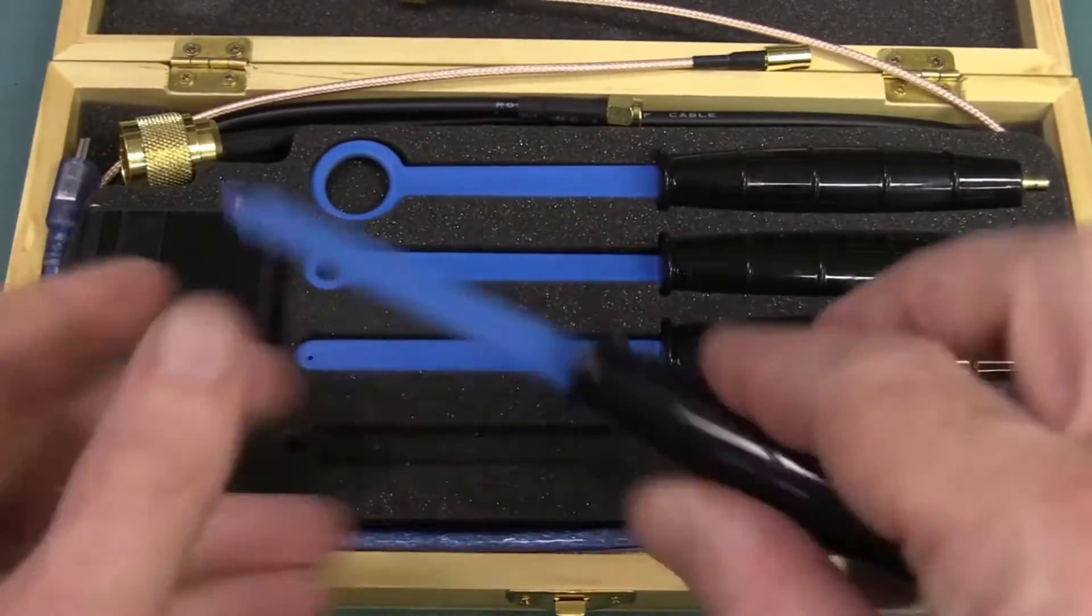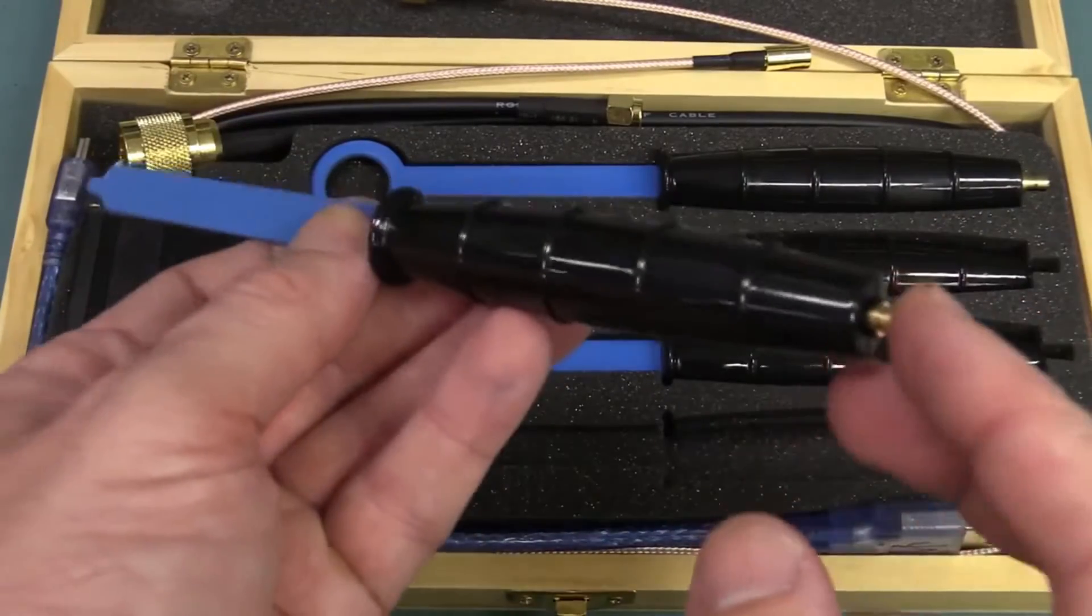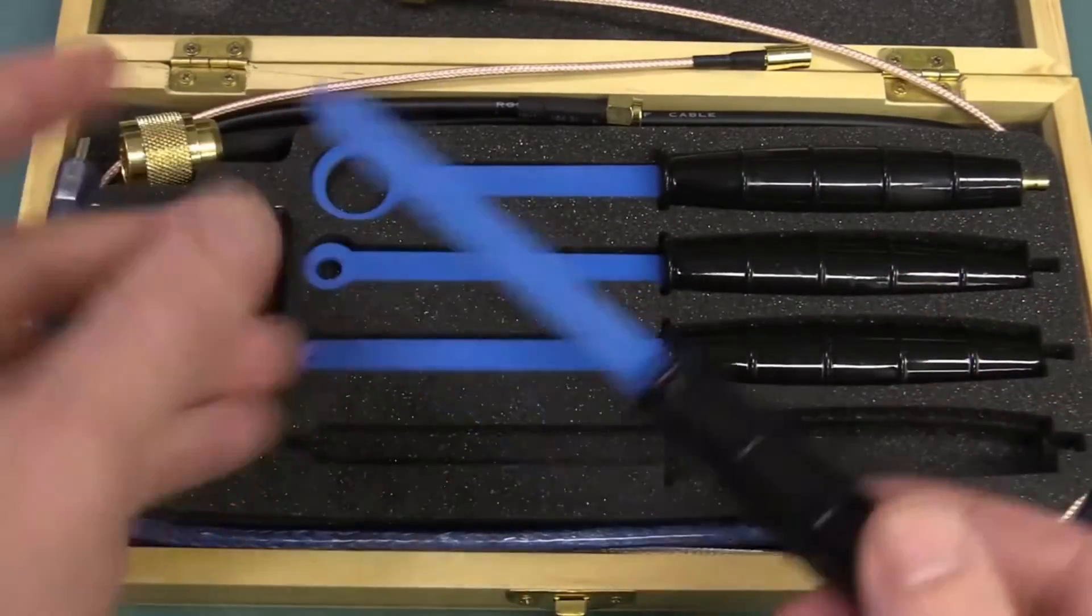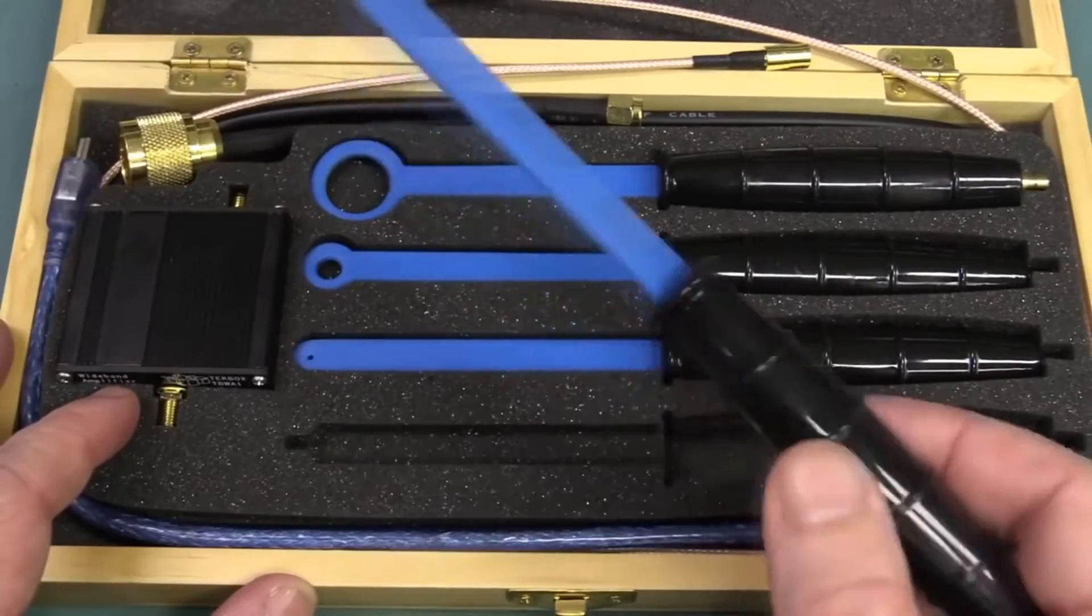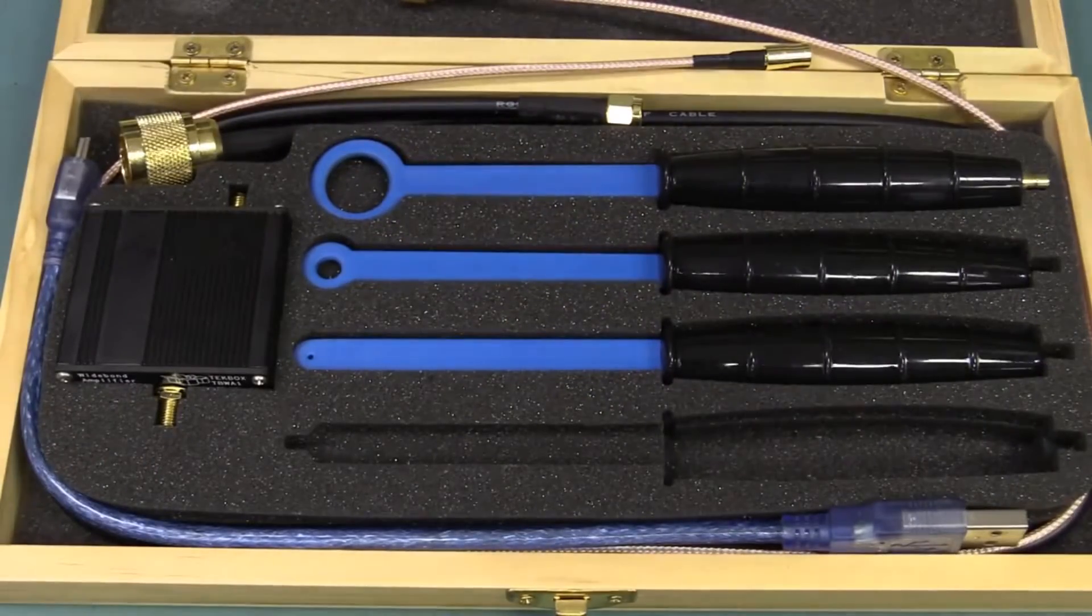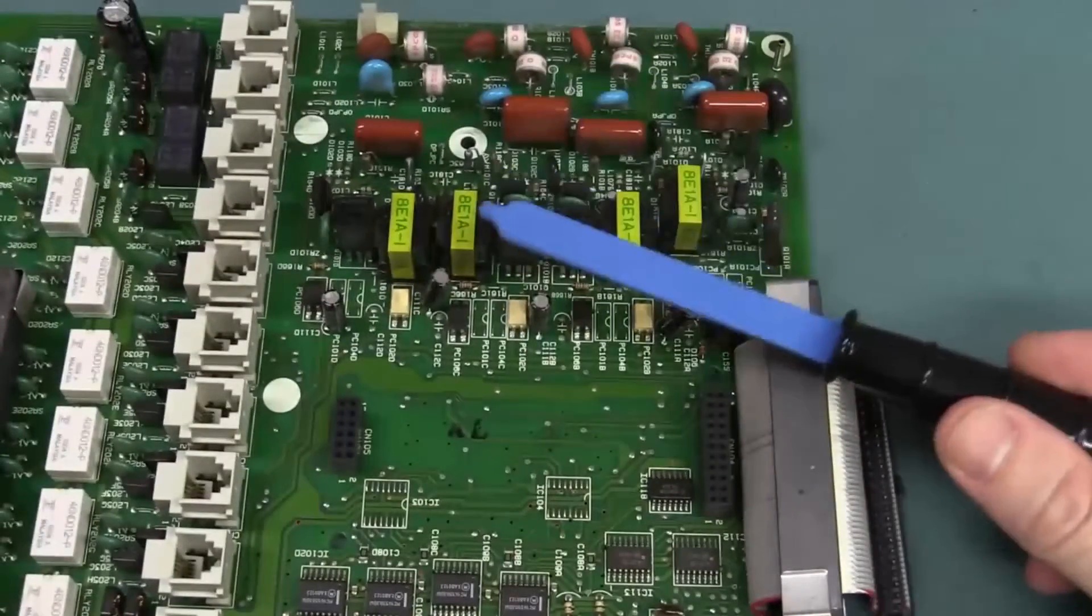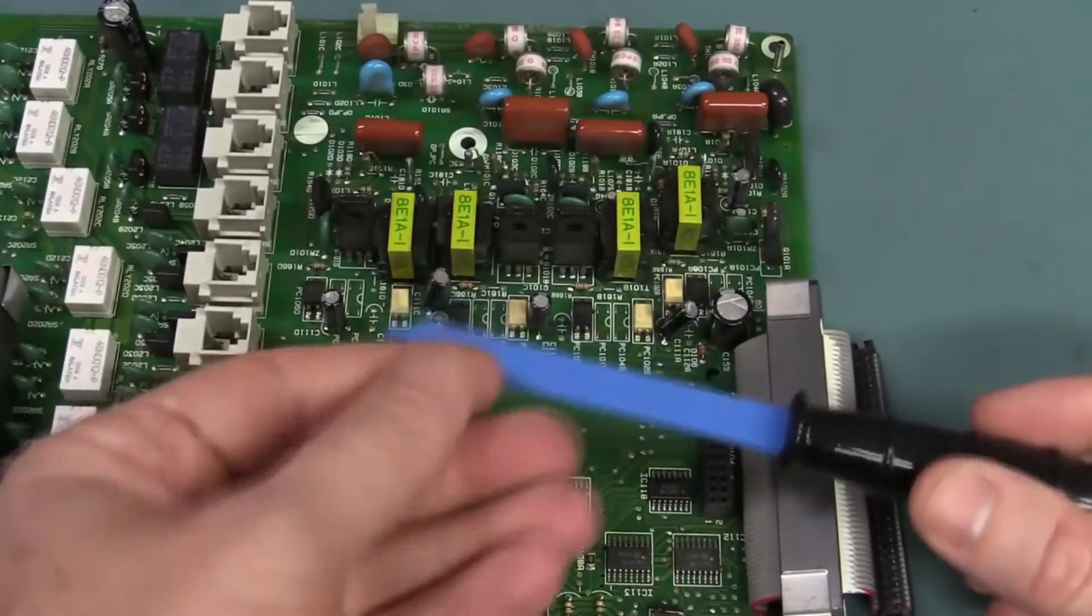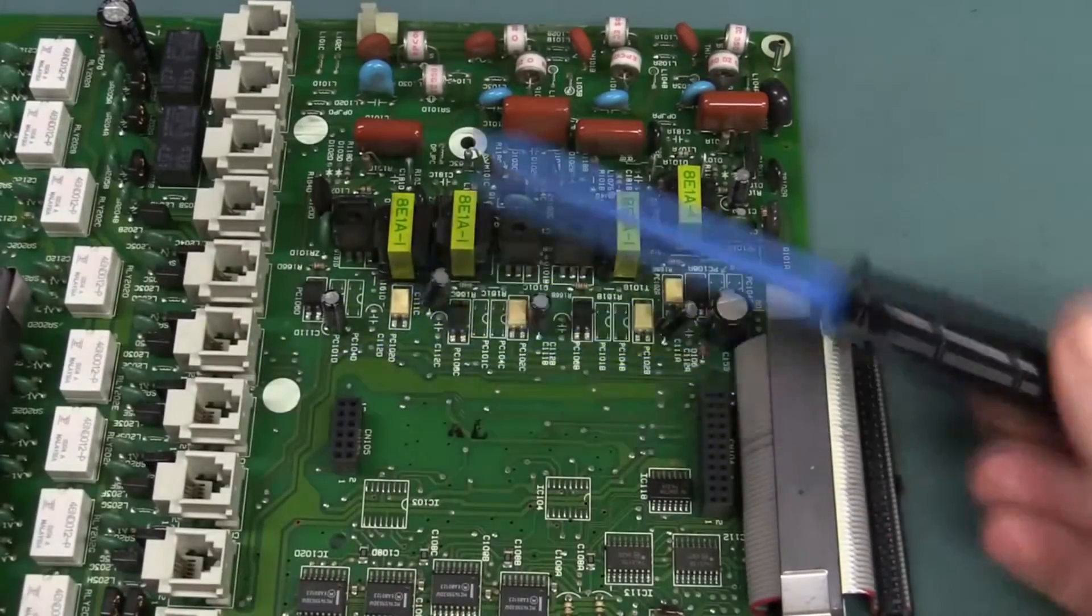So you can feed a signal and sweep a frequency into here, and you can generate stuff. So if you've got yourself a PCB, just a random PCB lying around, then you can actually generate a field and try and couple that into your product